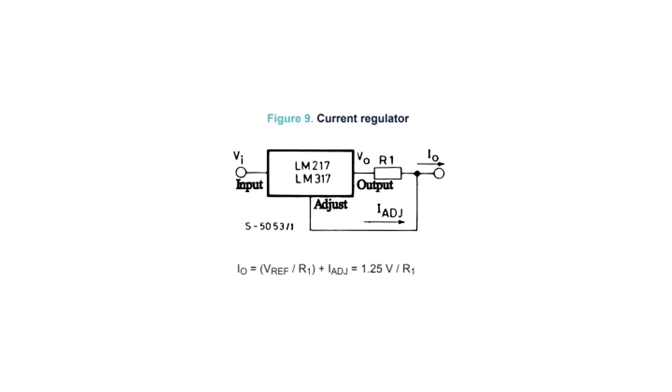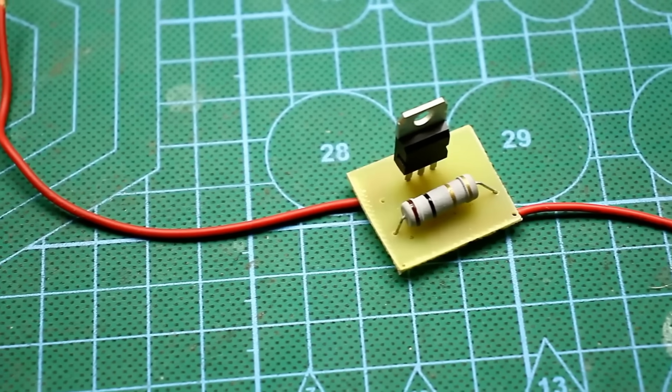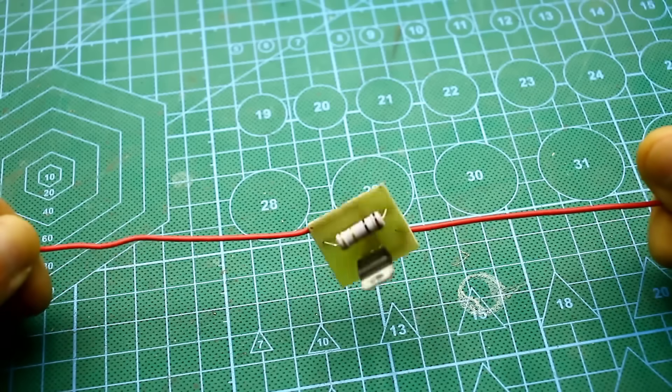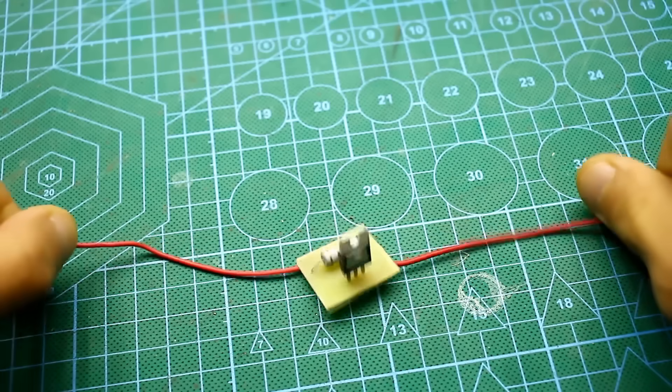In the current regulator circuit, exactly the same thing happens, except a current sensor is installed instead of a divider. The more current consumed by the load, the greater the voltage drop that will form on this sensor. This drop is monitored by the chip and, again, compared with the reference. Based on this, the chip increases or decreases the output voltage until the current at the output is stabilized at the required level.